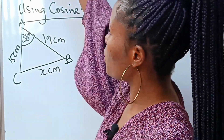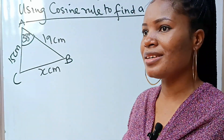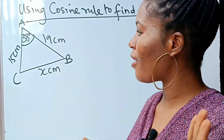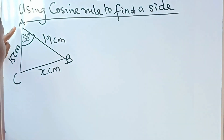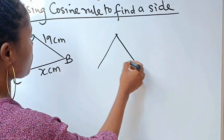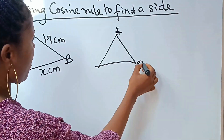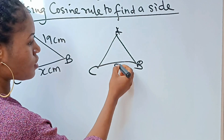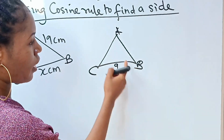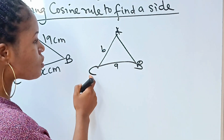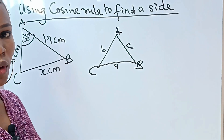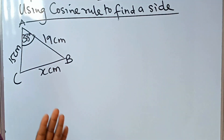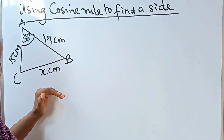One thing students find hard is how to memorize the cosine rule — it is actually very easy. When you have a triangle with vertices A, B, and C, know that the side facing capital A is small a, the side facing capital B is small b, and the side facing capital C is small c. That is the first thing you need to know.